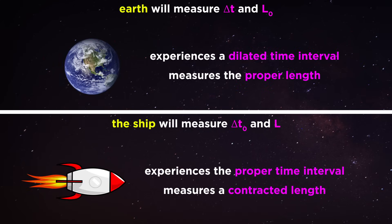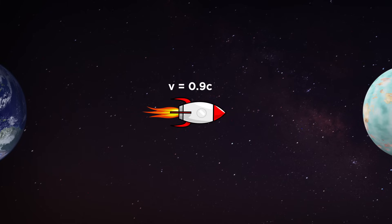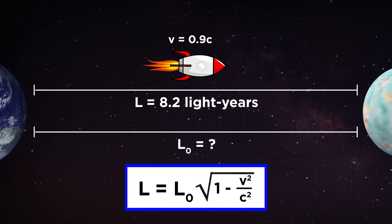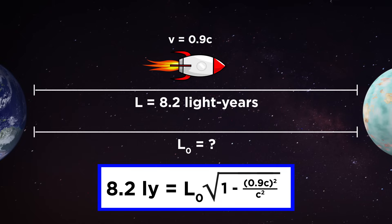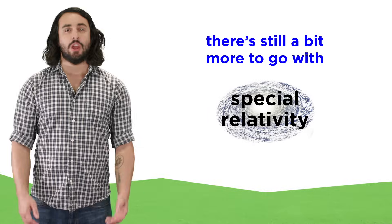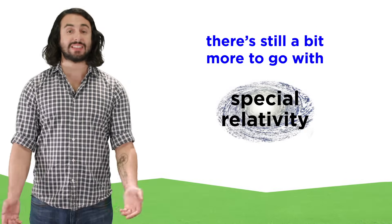This means that the proper time and proper length may not always be measured by the same observer, and we need to know how to assign these in order to do the math correctly. Let's say a ship is traveling from Earth to another system at ninety percent light speed. The person on board measures the journey as being eight point two light years in length. How far away is the destination according to someone on Earth? We can plug in eight point two for L and zero point nine c for v, then do some algebra and we get eighteen point eight for L-zero — the proper length between Earth and the destination. We still have more to go with special relativity, but first let's check comprehension.